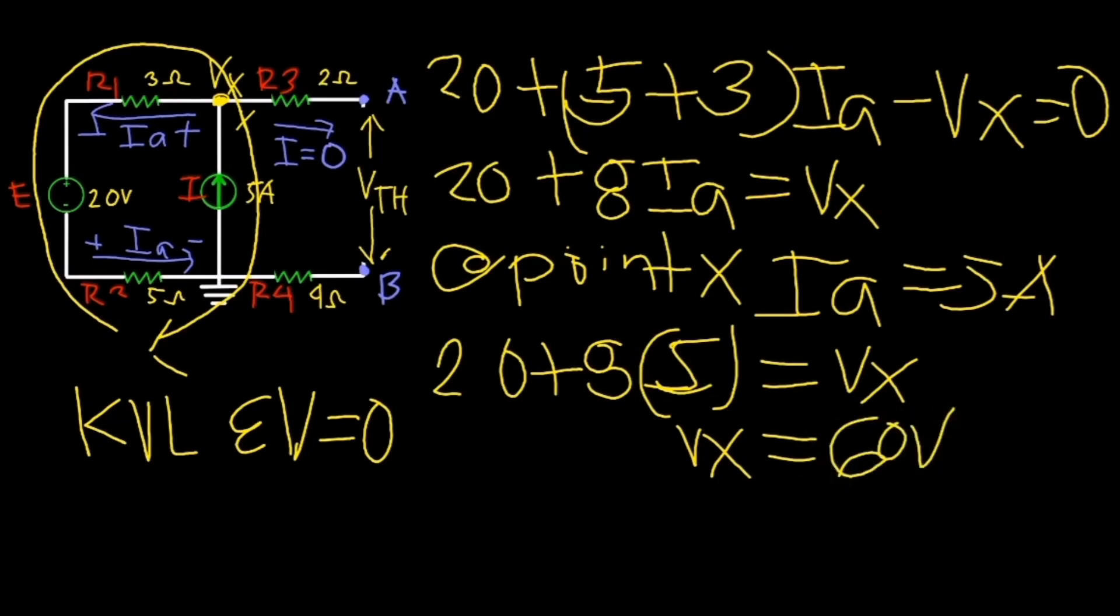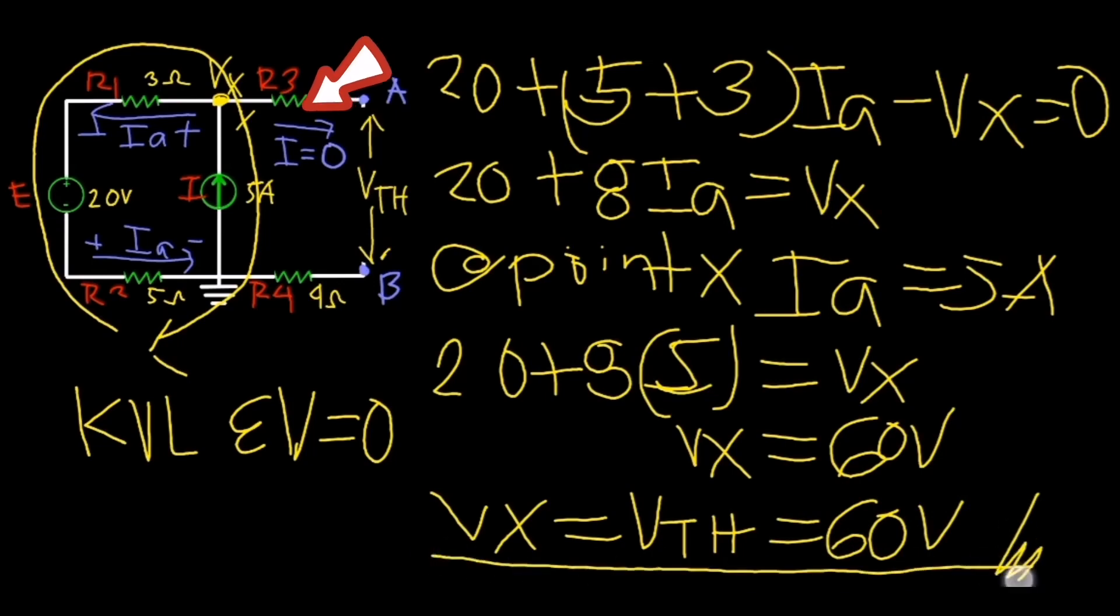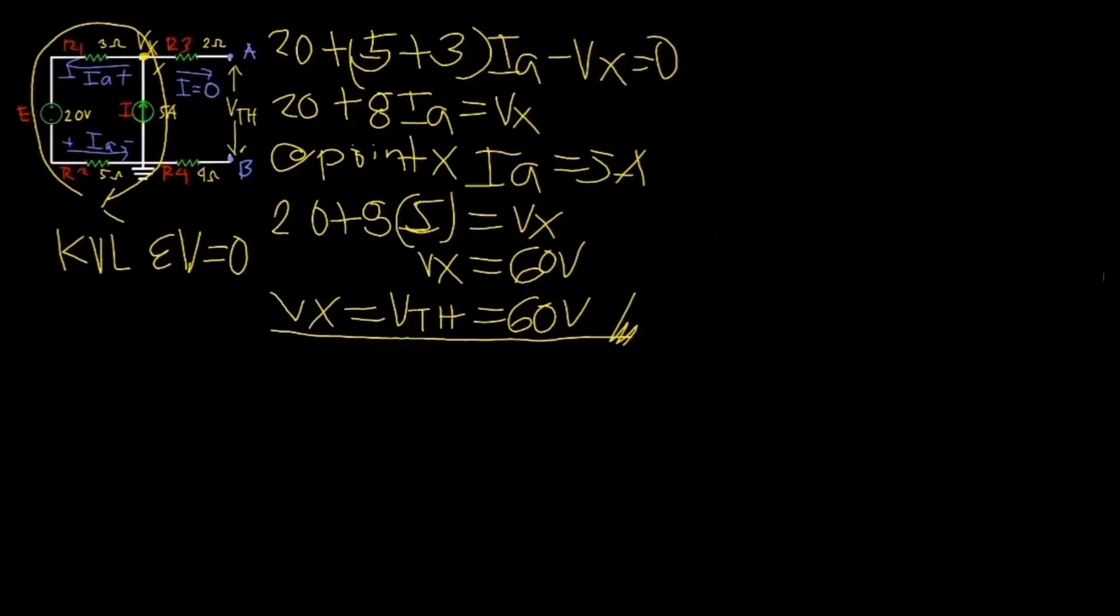As you inspect the circuit, the voltage at Vx is equal to Vth since there is no current flowing at R3 and R4 due to an open circuit. Now let's calculate Norton's equivalent current In by dividing Vth by Rn.